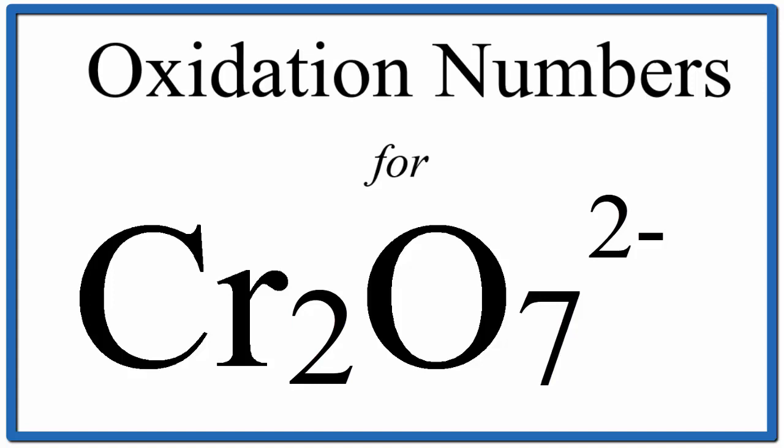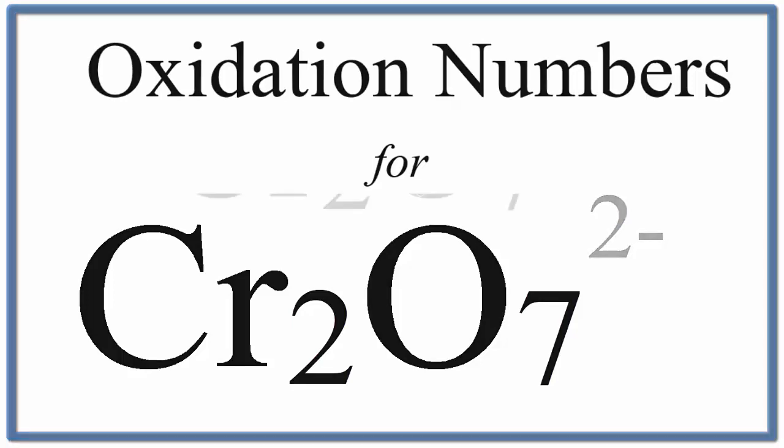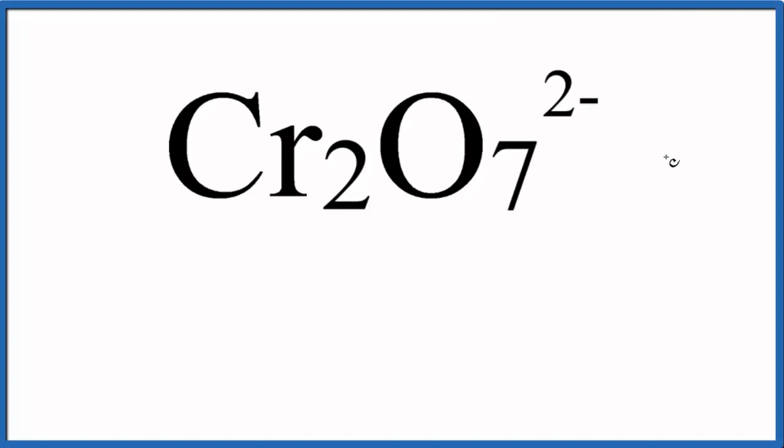In this video, we're going to find the oxidation number for the chromium in the Cr2O7 2- ion. It's the dichromate ion.